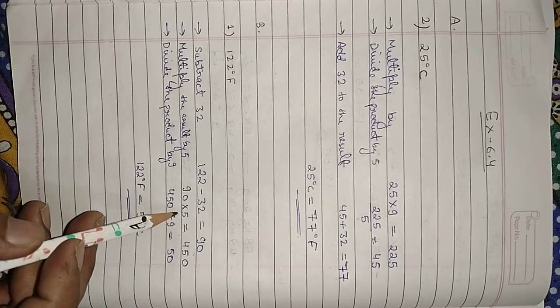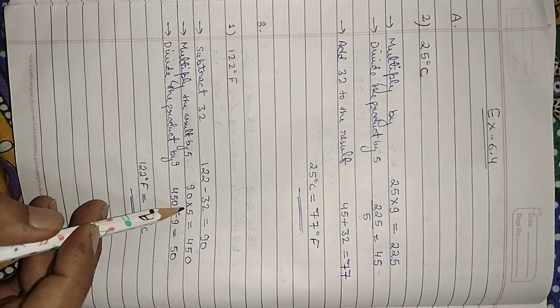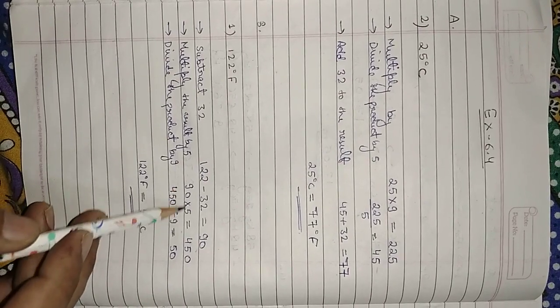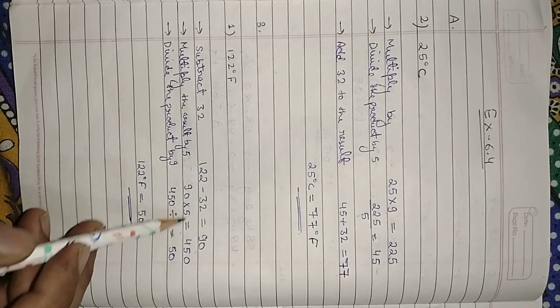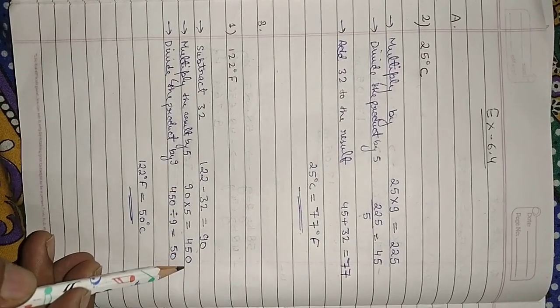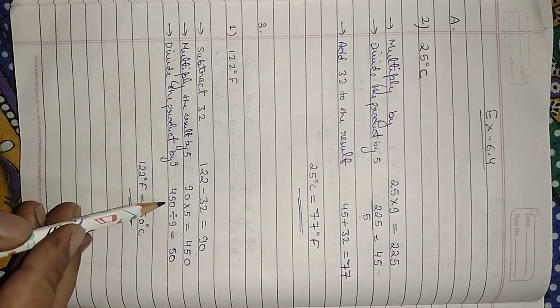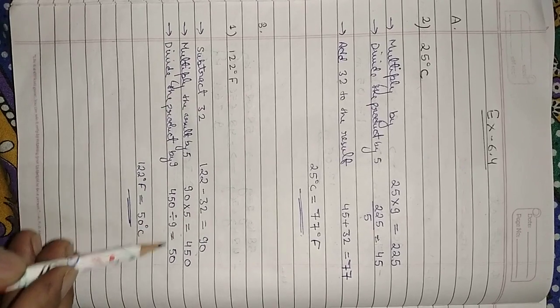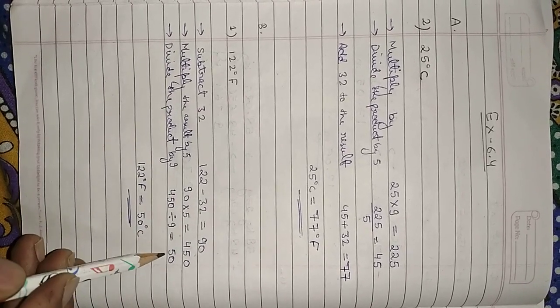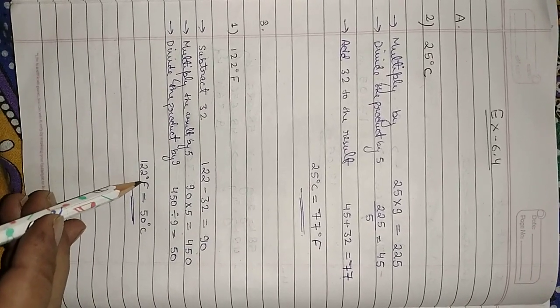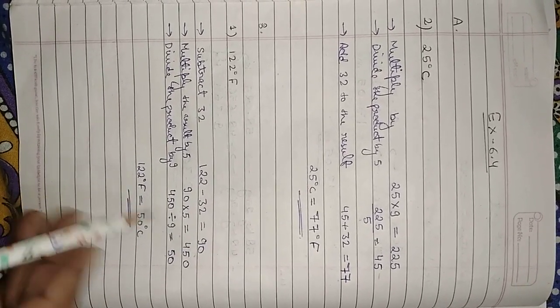Second step: multiply by 5. 90 times 5 equals 450. Third step: divide by 9. The answer is 50 degrees Celsius.